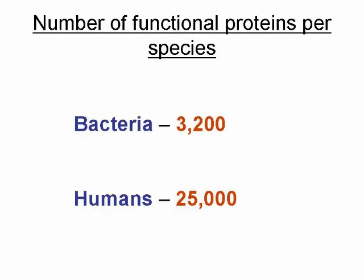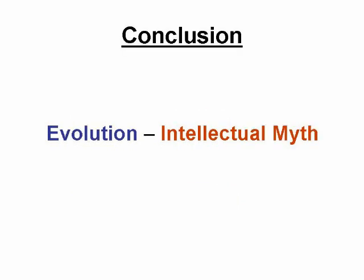This process would need to be repeated at least 3,200 times for the average bacterial cell to account for its total gene pool. In the case of humans with over 25,000 genes, with an average amino acid count per protein of over 1,000, the number of years to evolve would be unimaginable. In my view, with this type of data, evolution should not even be referred to as a theory, but a myth derived from intellectual pursuit.